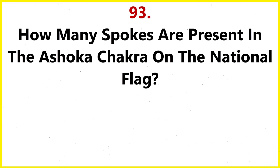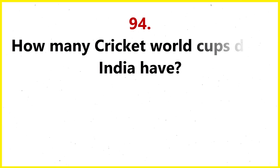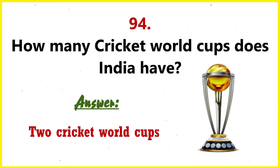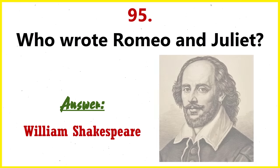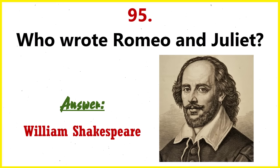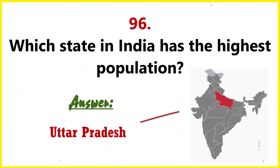How many spokes are present in the Ashoka Chakra on the national flag? There are 24 spokes in the Ashoka Chakra. How many cricket world cups does India have? India has two cricket world cups. Who wrote Romeo and Juliet? William Shakespeare. Which state in India has the highest population? Uttar Pradesh.